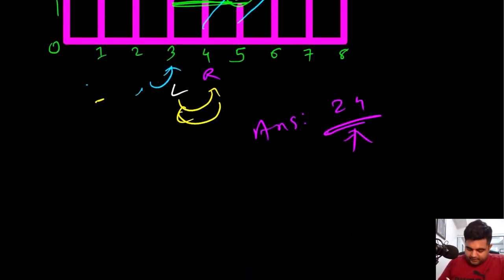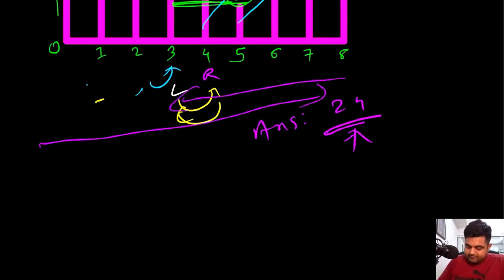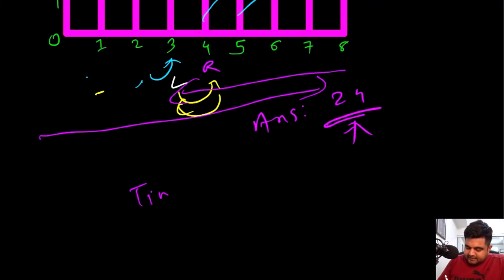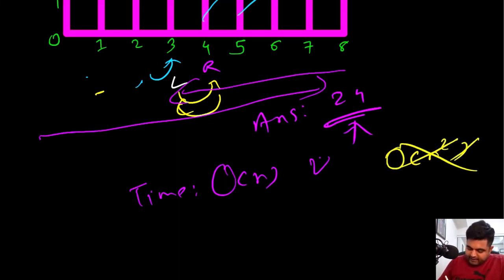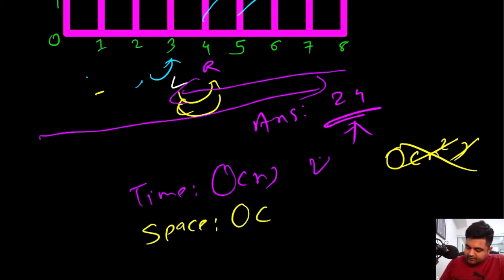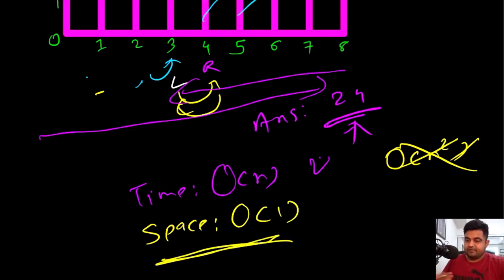The beautiful thing about this solution is that it completes in a single iteration between the two pointers. Time complexity is O(n), which is a much better improvement over the brute force O(n²). Space complexity is also constant O(1) because we only use a couple of pointers without any additional space. This is a great way to learn the two-pointer technique.